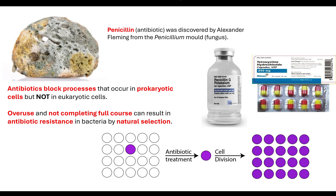That becomes a problem — if you try to use that same antibiotic to kill off the prokaryote, it's not effective. Examples of this are MRSA and C. difficile. Antibiotic resistance has become a big issue and means we are having to investigate what we can do to reduce its impact.